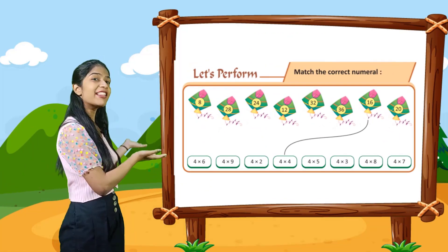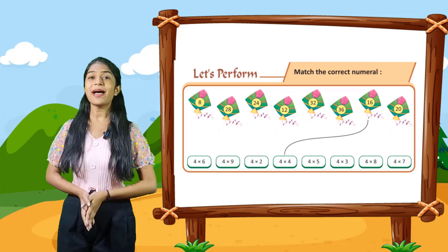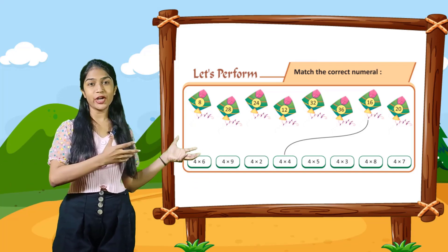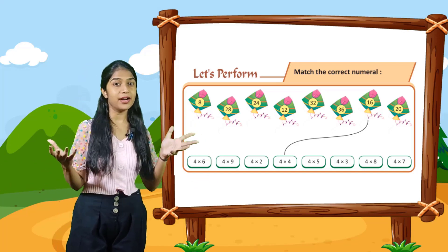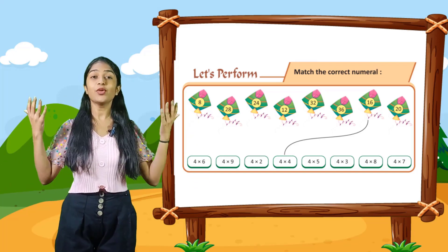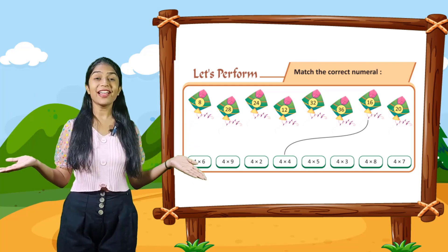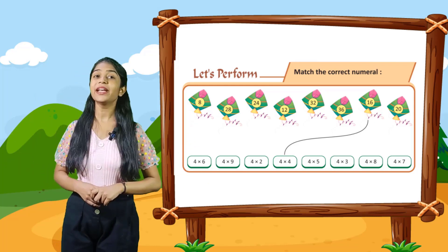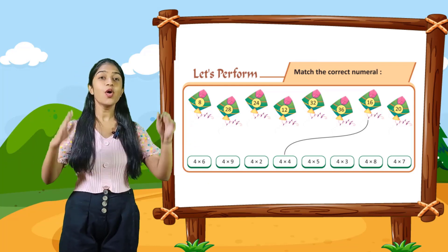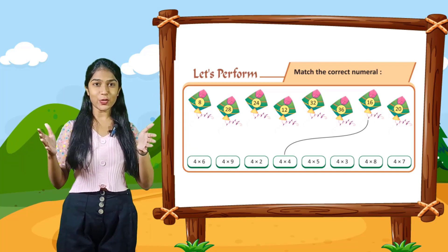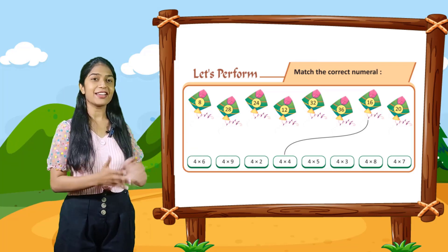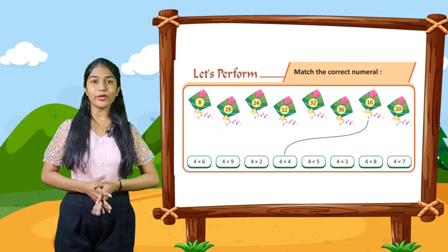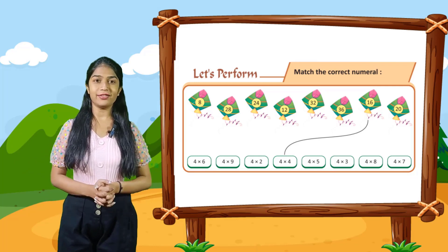So kids, now let's perform. Match the correct numeral. Here are some kites given to you with numbers and you have to match the right answer. For example, the first kite is carrying number 8, so the correct answer is 4 into 2 is 8. Rest you have to do yourself.